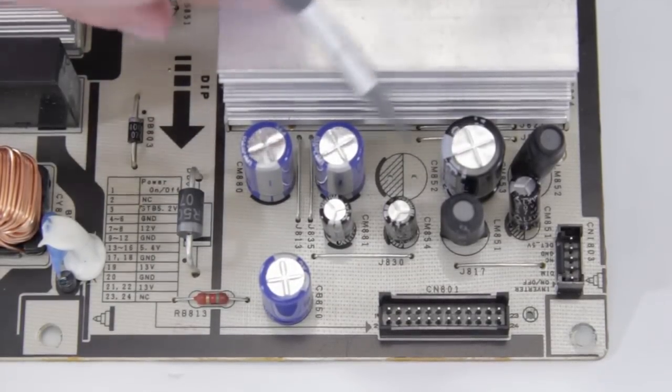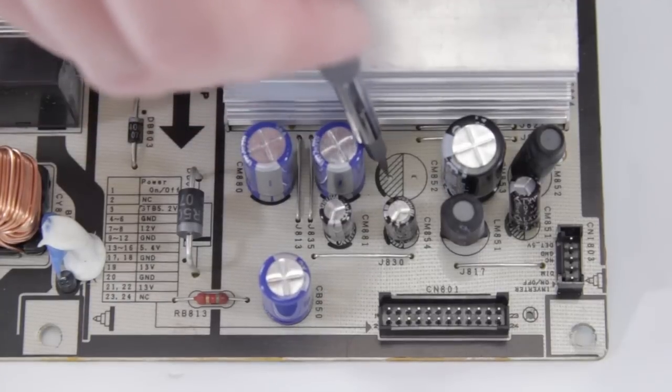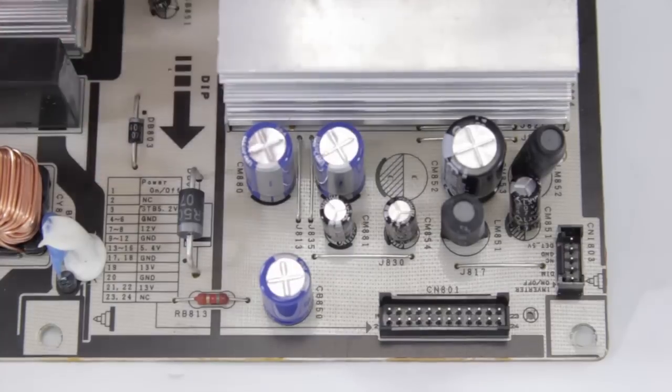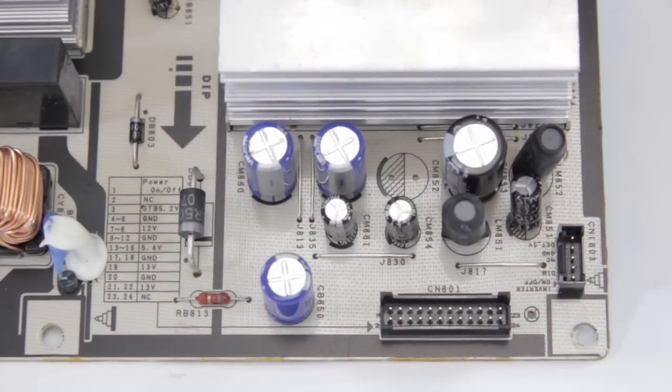And on this cap, just because it's a little bit wider, you can't see it, but it is the same direction as this one. So I made sure that the negative side is on this side, and I'll do the same with the next one. And then we can go ahead and flip the board over and start soldering it in place.